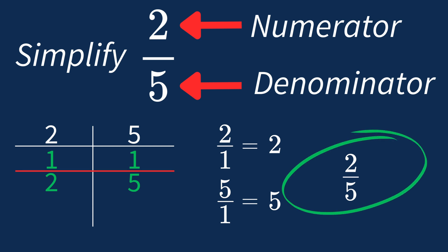This confirms that 2 over 5 is already in its simplest form, because there's no larger common factor to reduce it further. So 2 over 5 is an irreducible fraction.